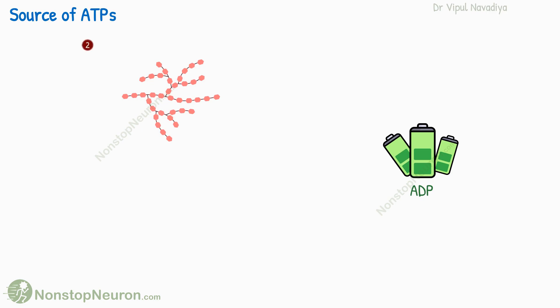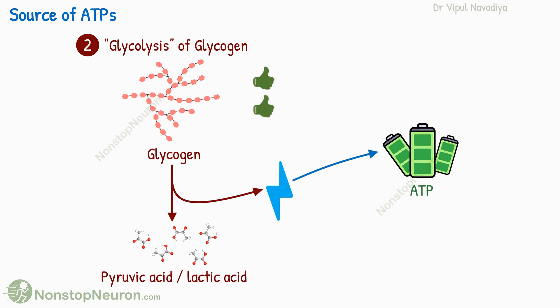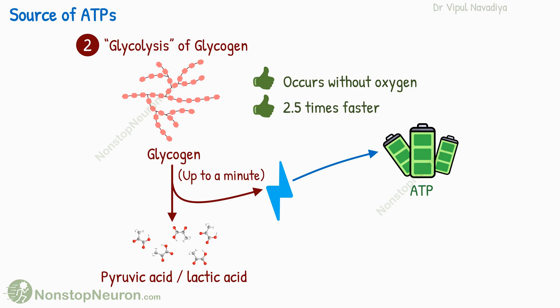The second source of energy is the glycolysis of glycogen. Glycogen is already stored in muscle cells. Its rapid breakdown into pyruvic acid and lactic acid liberates energy, which is used to synthesize ATPs. There are two advantages with this source. First, it can occur without oxygen, so it can supply ATPs even when enough oxygen is not being delivered to the muscle. And second, it's very fast — 2.5 times faster than the oxidative mechanism in generating ATPs. It can sustain maximum muscle contraction for up to one minute. But eventually, the accumulation of so many end products of glycolysis makes it incapable of supplying ATPs any further.